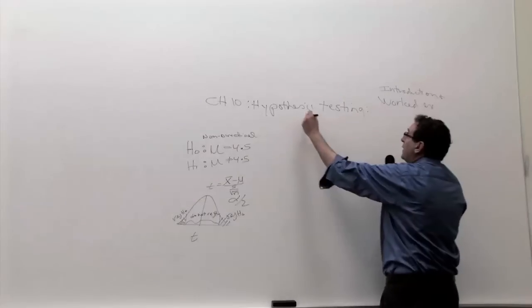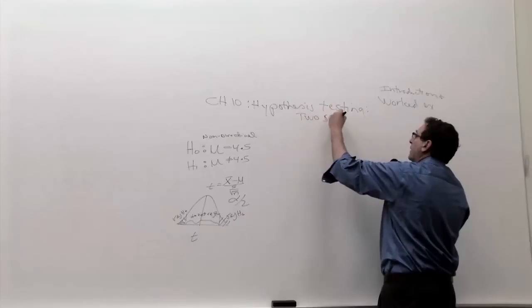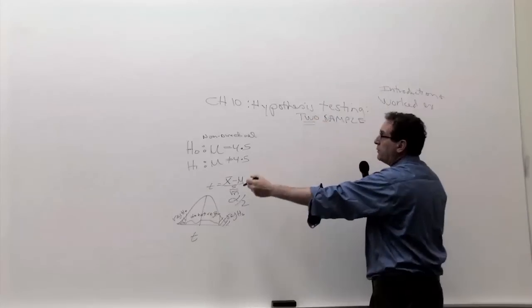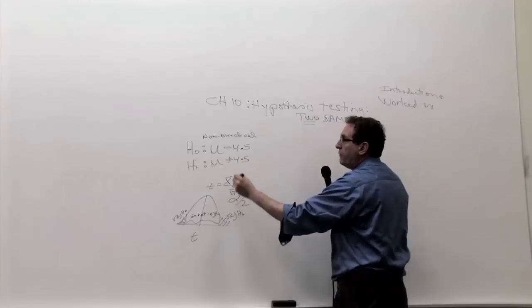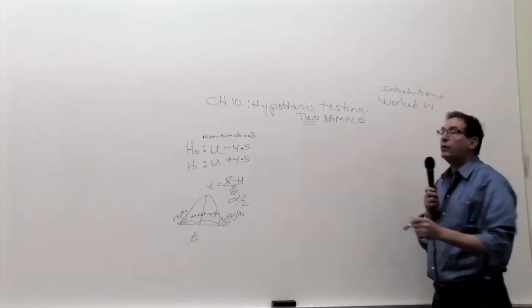But it's hypothesis testing, two-sample hypothesis testing, as opposed to one sample. This was only if you took one sample, five numbers, got one average, one standard deviation, one of everything. Now in this chapter, we're going to get two of everything.